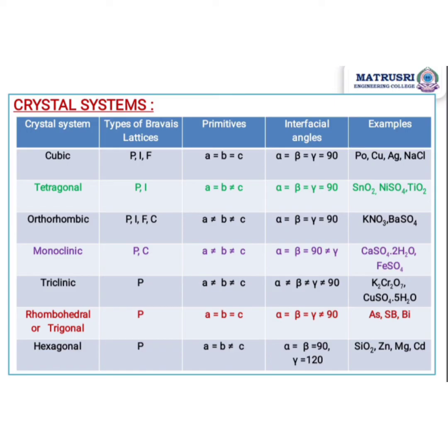In the table you can see the Bravais lattice symbols: P for primitive, I for body-centered, F for face-centered, and C for base-centered. Let us now discuss these Bravais lattices in more detail.